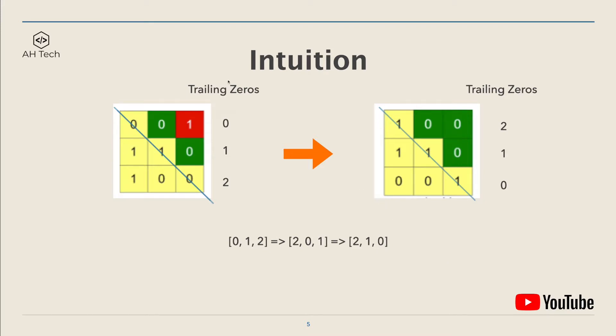For example one, the first step is to count how many trailing zeros are in each row. So for this first row, there's no trailing zero. And second row, there's one. And there are two trailing zeros in the third row.